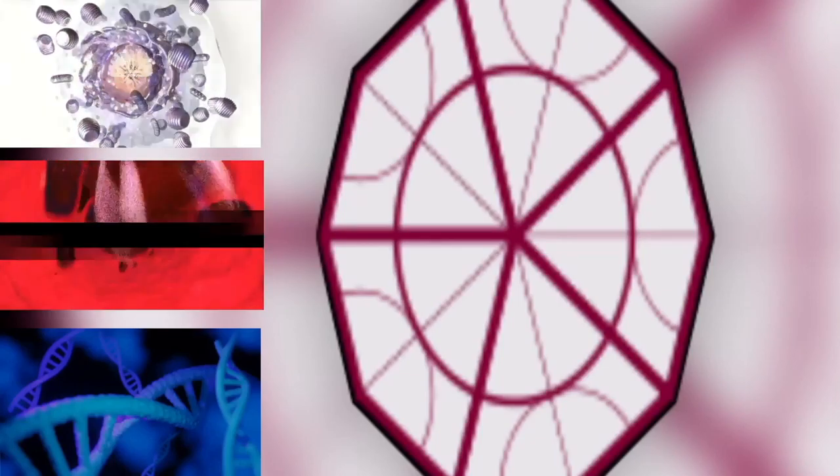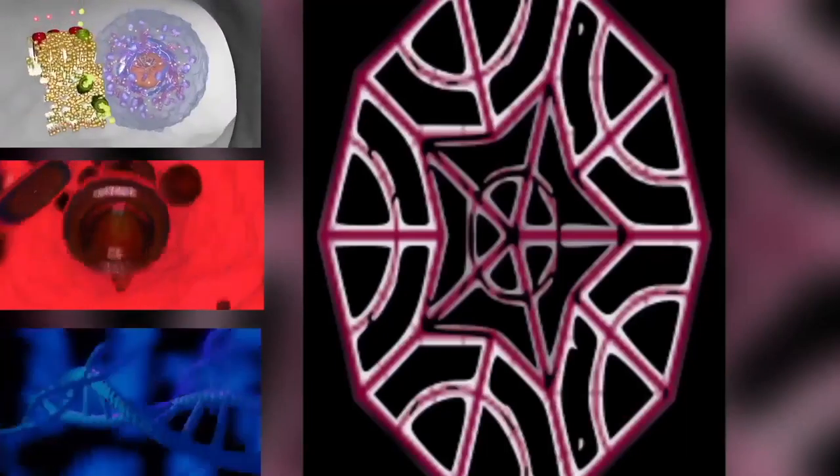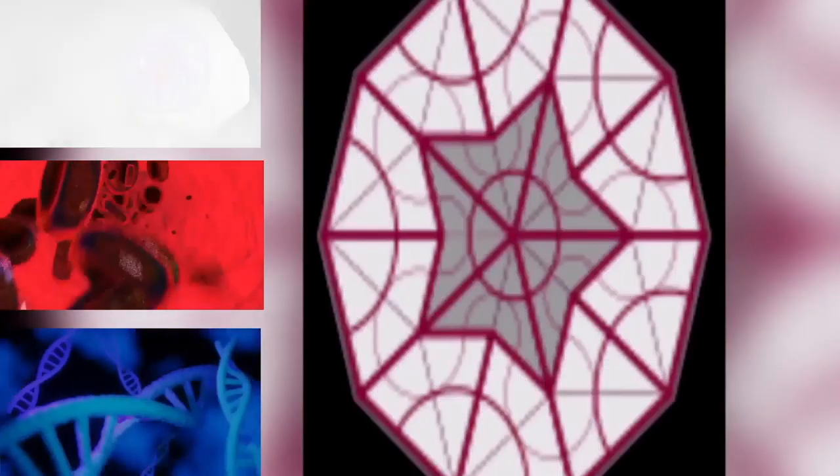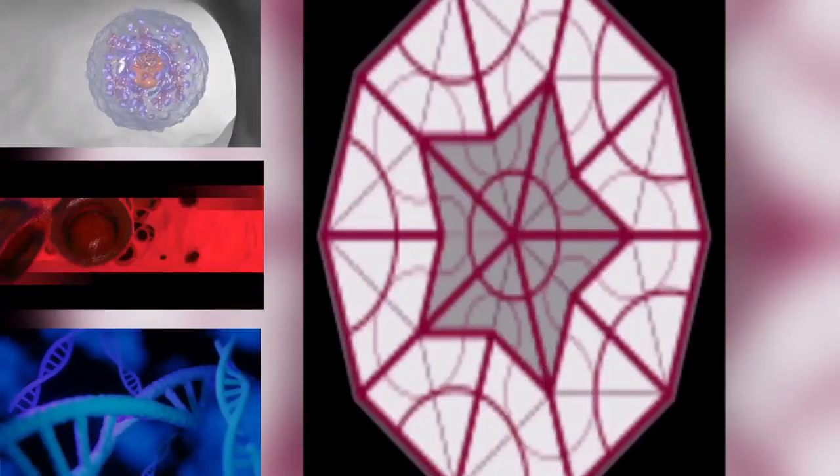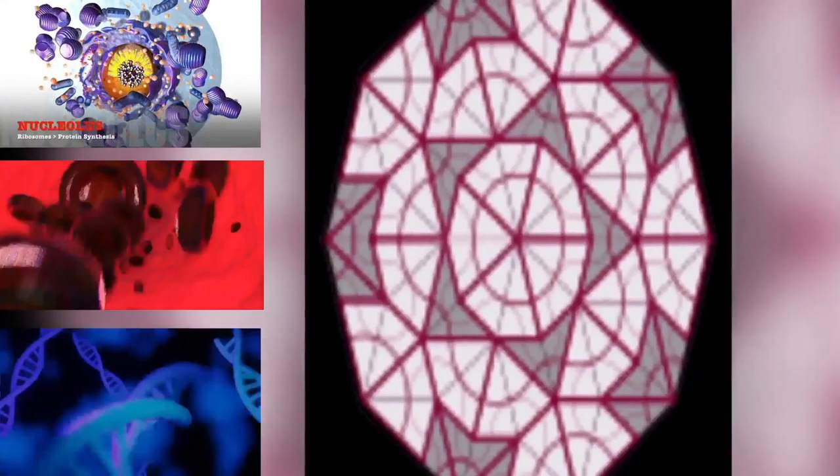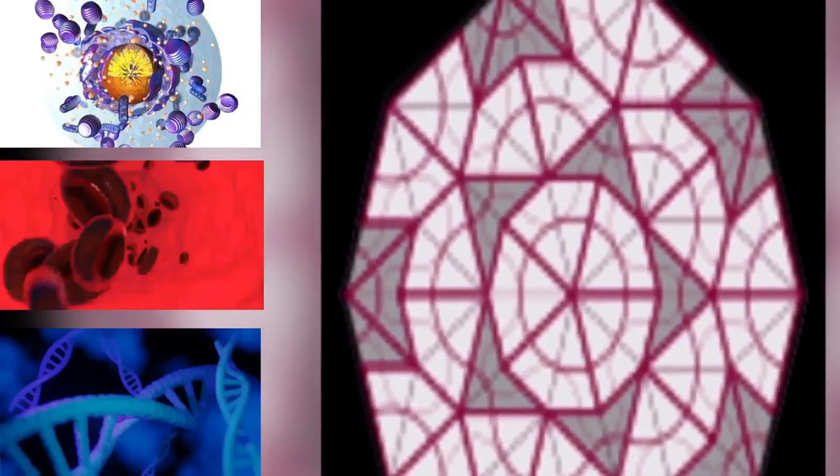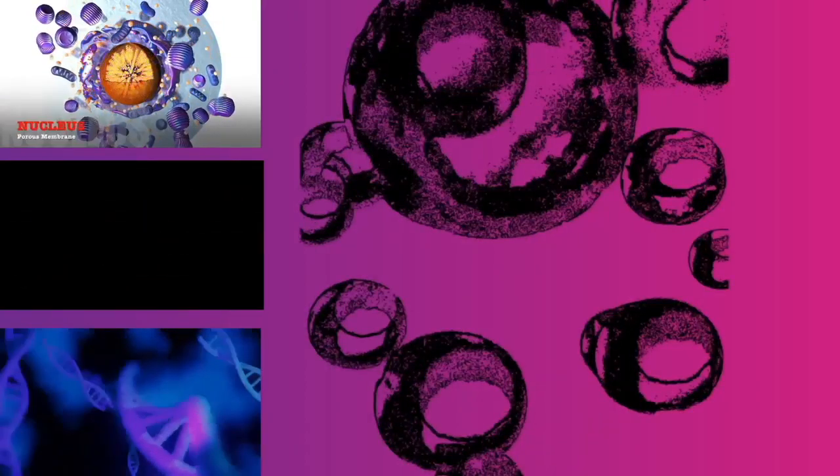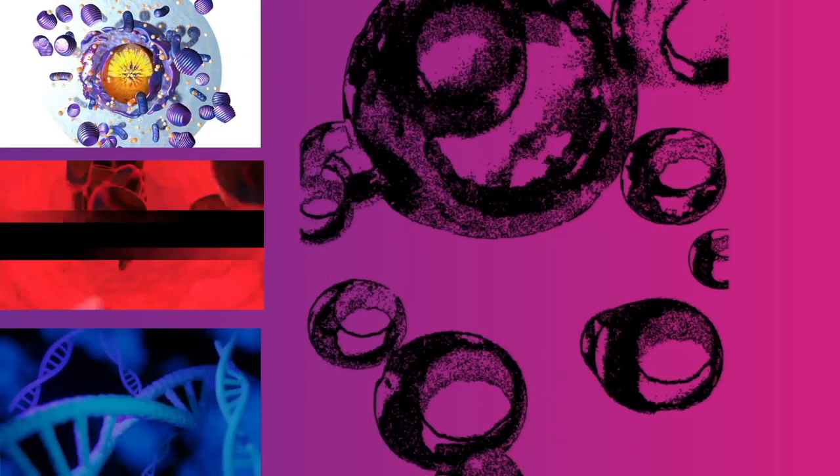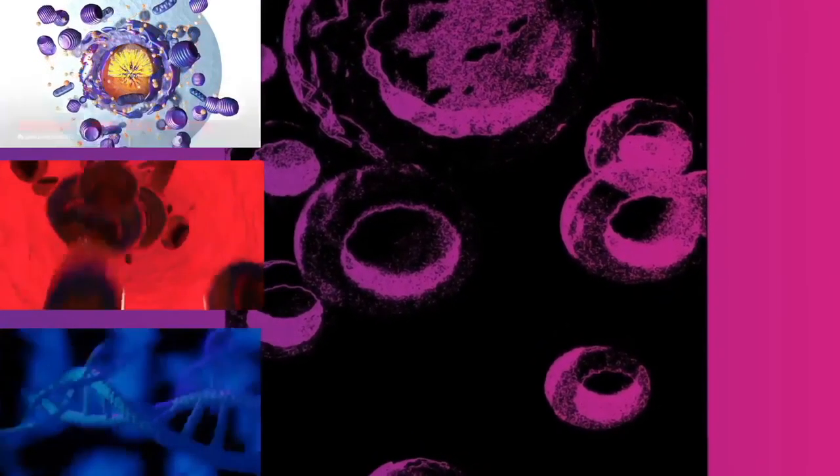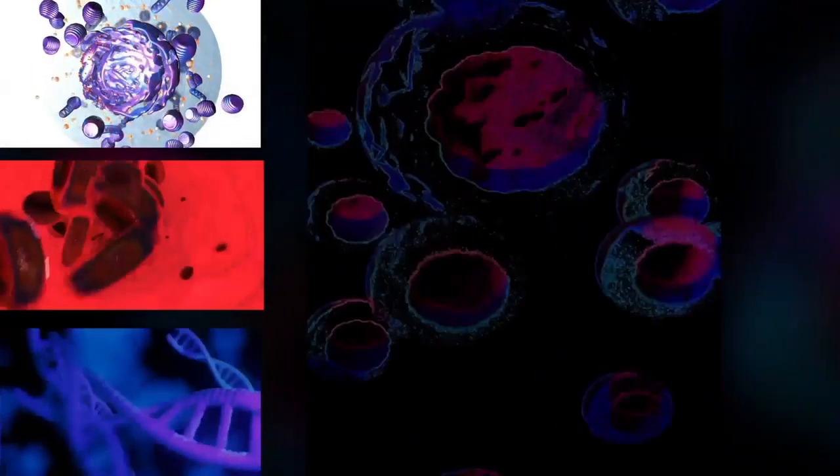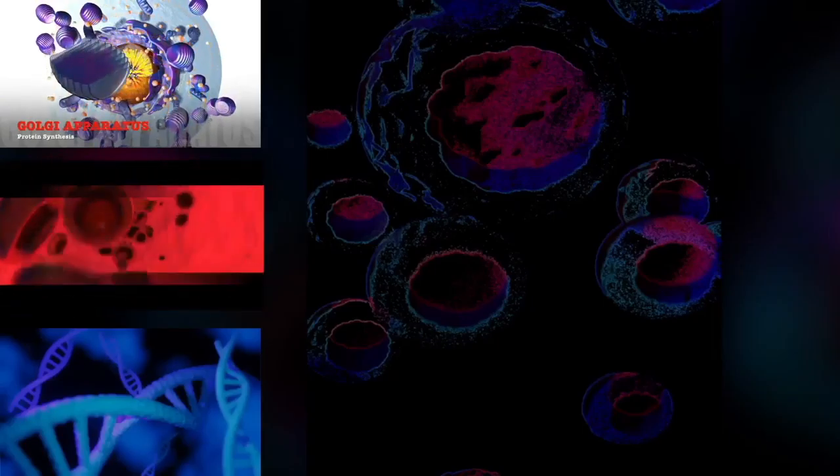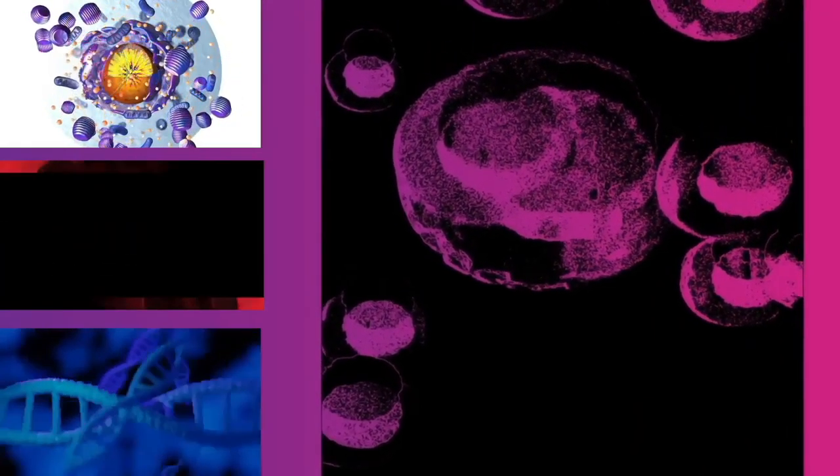Sociality: While prokaryotes are considered strictly unicellular, most conform stable aggregate communities. When such communities are encased in a stabilizing polymer matrix (slime), they may be called biofilms. Cells in biofilms often show distinct patterns of gene expression (phenotypic differentiation) in time and space. Also, as with multicellular eukaryotes, these changes in expression often appear to result from cell-to-cell signaling, a phenomenon known as quorum sensing.